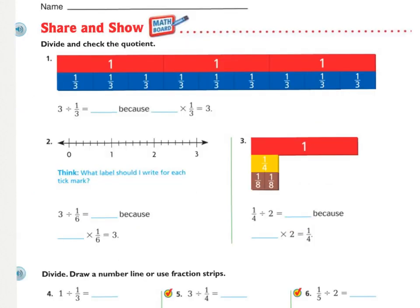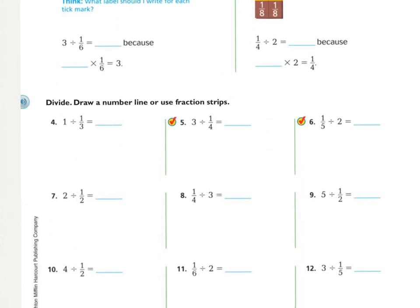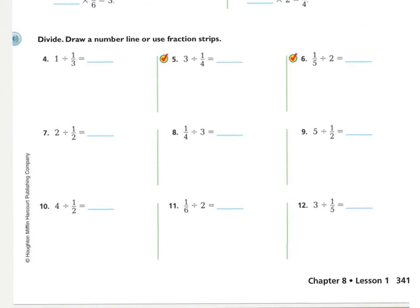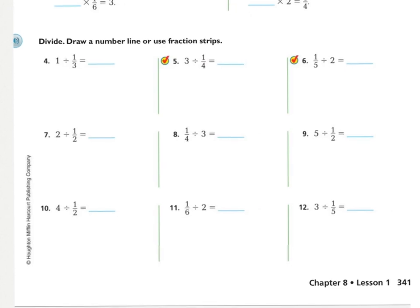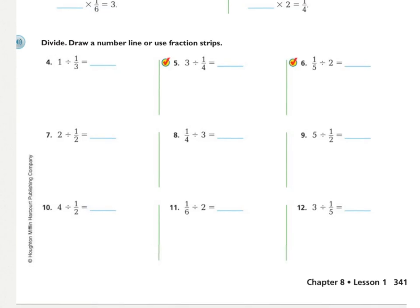Go ahead and press pause while you're working on the Share and Show. These first few, they give you your visuals, your fraction strips or your number line, and they give you some hints to get you going. Down here, because your Share and Show is a full page, I would suggest you try to use the number line because that's the strategy that you're able to use any time. You're not always going to have the fraction strips. So draw a number line and press pause while you work. When you come back, I will be showing you the number lines for numbers five and six, but I'll just show you the answers for the rest of them.